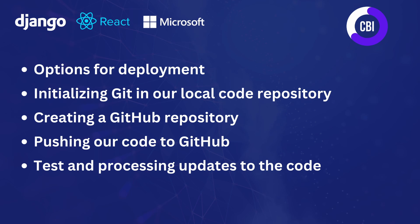To realize that, we're going to be following five steps. We'll start by discussing some deployment options and which one we'll be picking today. Next we'll initialize Git inside our local code repository and store our code inside Git. Then we'll create a GitHub repository, push our code to GitHub using Git — Git being the bridge between our local code and our GitHub repository — and finally test everything and see how to update our code on the GitHub portal.